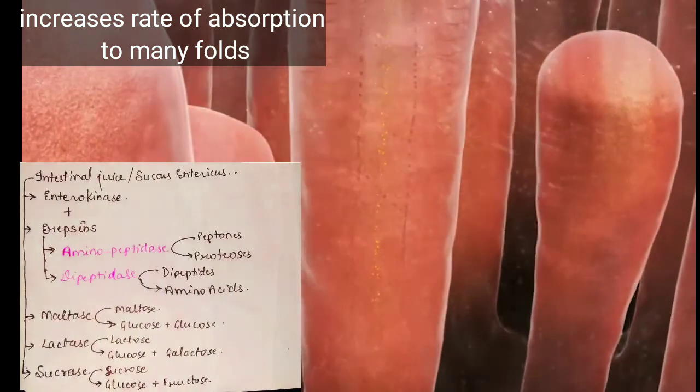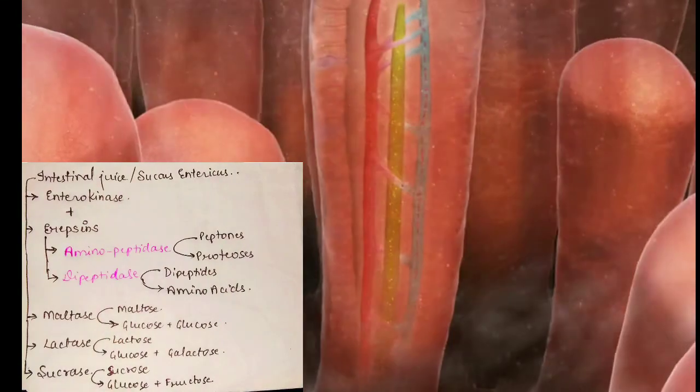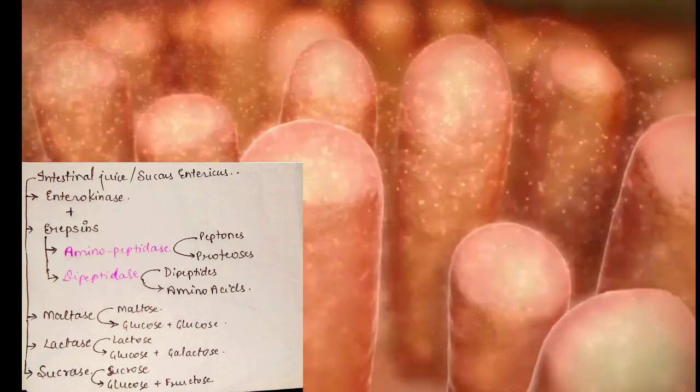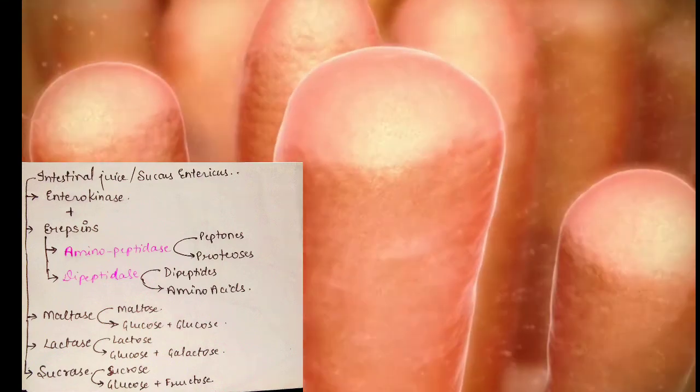Intestinal juice contains enterokinase and erepsin, i.e., aminopeptidase and dipeptidase, which break down peptones and proteoses to dipeptides and dipeptides to amino acids simultaneously.